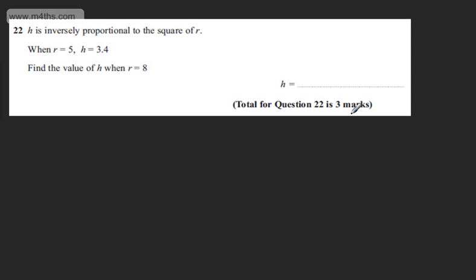This is question 22, and it carries 3 marks. We're told H is inversely proportional to the square of R. When R equals 5, H equals 3.4. We're asked to find the value of H when R equals 8.